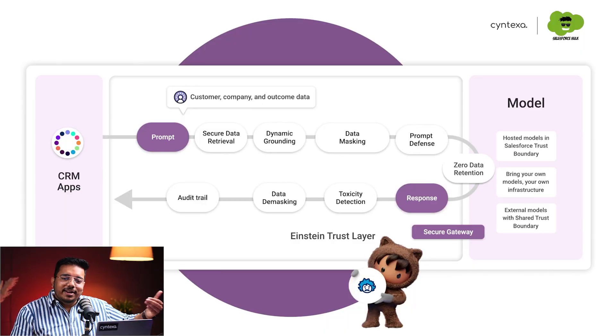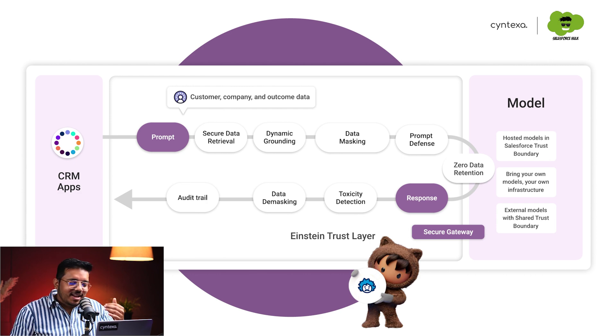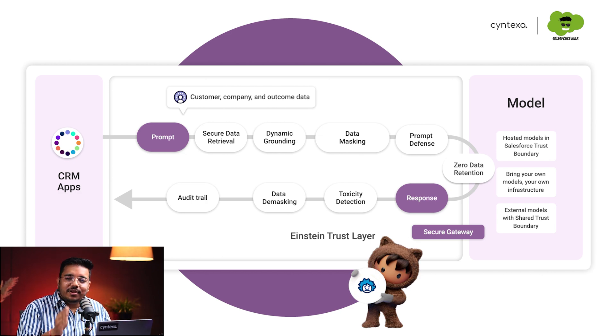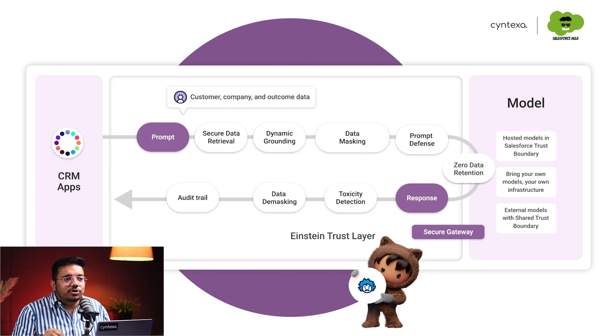Once you have the response, it will be checked for toxicity — making sure it's not toxic and not giving something unexpected. Then it will do data demasking, which means it will put Henry back into the picture. It had masked that data and it will put it back. Then it will log what happened in the audit trail and give you the response. This is the Einstein Trust Layer — it ensures the critical data you have of your customers stays inside Salesforce and is not exposed where it should not be. It's a very core part of Agent Force.